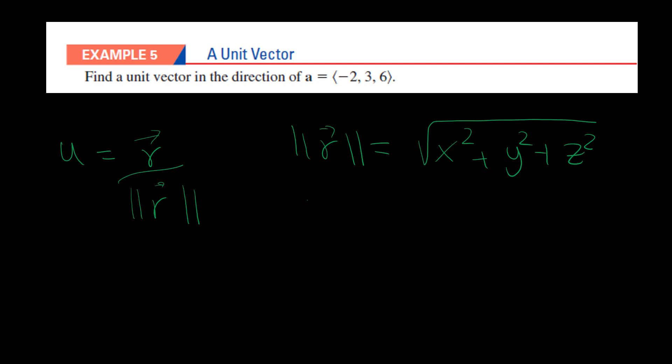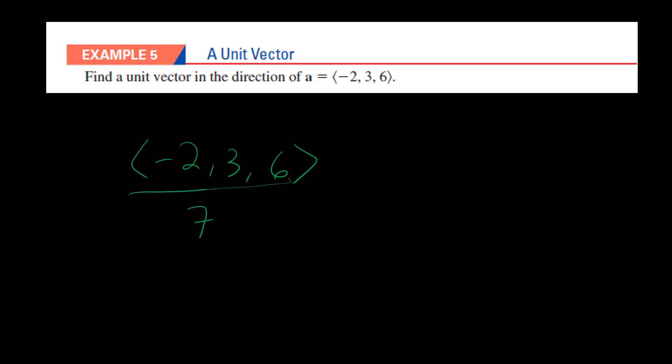In this case we have negative 2 squared, 3 squared, plus 6 squared, and square root, which gives square root of 49, which is 7. Now we have the norm of the vector. To find the unit vector, we place the vector itself over the norm of it, which gives us (-2/7, 3/7, 6/7). This is my unit vector in 3-space. Thanks for watching.